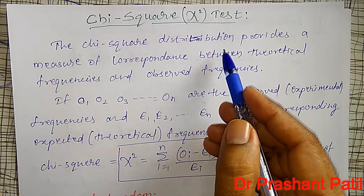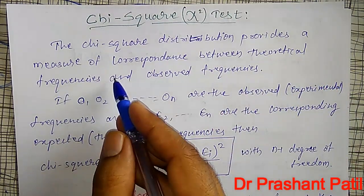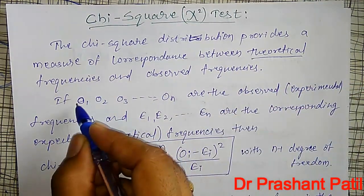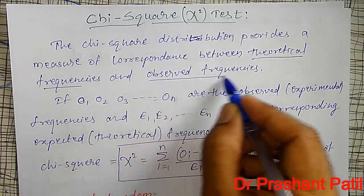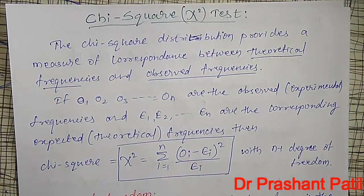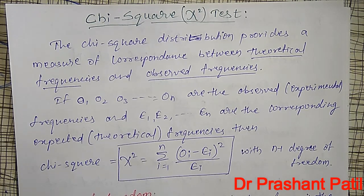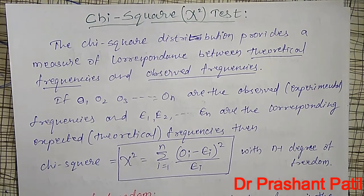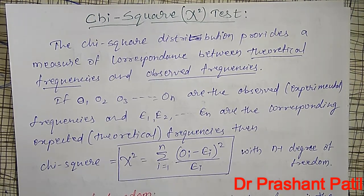Chi-square distribution provides us a measure of the correspondence between theoretical frequencies and observed frequencies. We use this chi-square distribution to test the theoretical frequencies — that is, the comparison between theoretical frequencies and observed frequencies — whether they are nearly equal or not, which is the goodness of fit. We are testing whether the theoretical frequencies and observed frequencies are similar to each other using chi-square distribution.